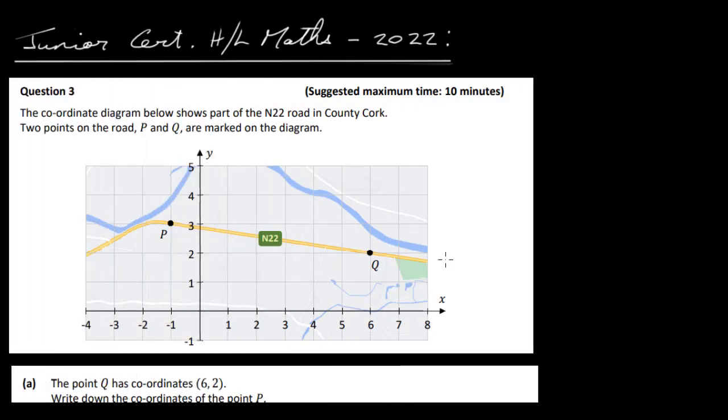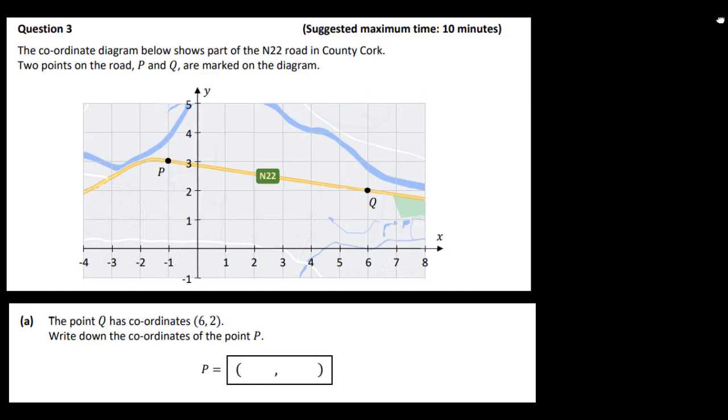This is the Junior Certificate Higher Level Maths Paper for 2022, Question 3. We have the coordinate diagram below and it shows part of the N22 road in County Cork. Two points on the road, P and Q, are marked on the diagram. This one here is minus 1, 3, and this one here is 6, 2.